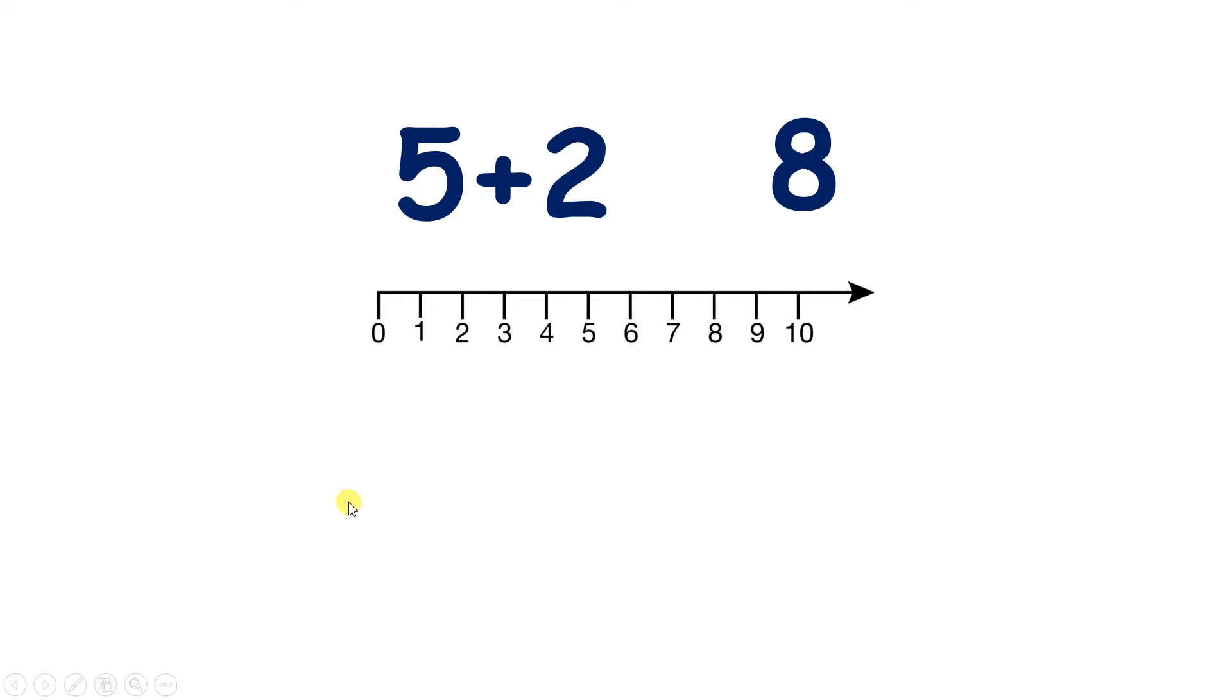So now we have 5 plus 2, and we have the number 8. I want to know whether 5 plus 2 is greater or less than or equal to 8. So if we start with 5 on our number line, and go along 1, 2, we get to 7. So 5 plus 2 is 7.